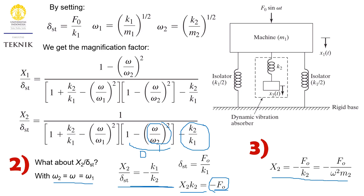Working out the mathematics further, we can arrive at an expression showing that X2 is a function of m2. So if we would like to change the value of X2, we need to work out the value of m2. Usually, X2 is the design condition to be met — for example, we do not want mass 2 to oscillate more than 2 millimeters maximum. By having this condition, we can set the value of m2.